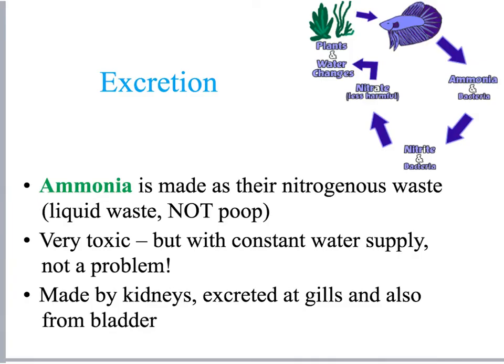When a meal is eaten, the organism must excrete its waste product. Ammonia is the waste product that fish excrete. Ammonia is very toxic in its purest form, but it gets broken down into lower forms of nitrogen in the water. Ammonia and bacteria break it down to nitrite, and then bacteria further break it down to nitrate, a lesser form of nitrogen. Plants and changes in the water help break it down further. This waste is created by the kidneys and excreted through both the gills and the bladder.